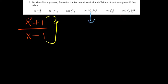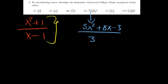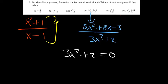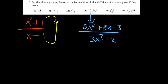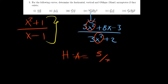For the fourth one: 5x squared plus 8x minus 3 over 3x squared plus 2. The powers are the same. For the vertical asymptote, equate the denominator to 0: 3x squared plus 2 equals 0, giving 3x squared equal to negative 2. You can't find the square root of a negative number, so there is no vertical asymptote here either. For the horizontal asymptote, we have the same degree — x squared over x squared — so it's going to be 5 over 3. Simple and straightforward.